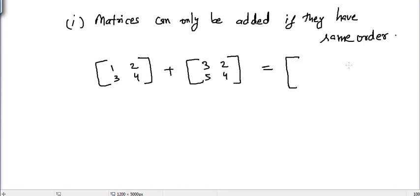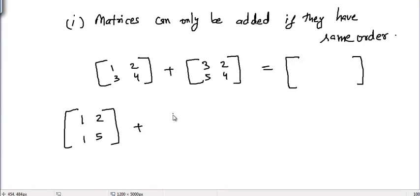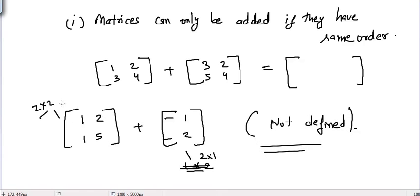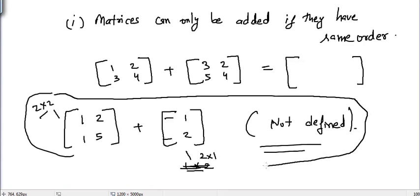Let's take another example where we have matrices of different orders. This is a two cross two matrix because it has two rows and two columns, and this is a two cross one matrix because it has two rows and just a single column. Now these two matrices have different orders, that is why we cannot add these matrices — the addition of these two matrices is not defined.